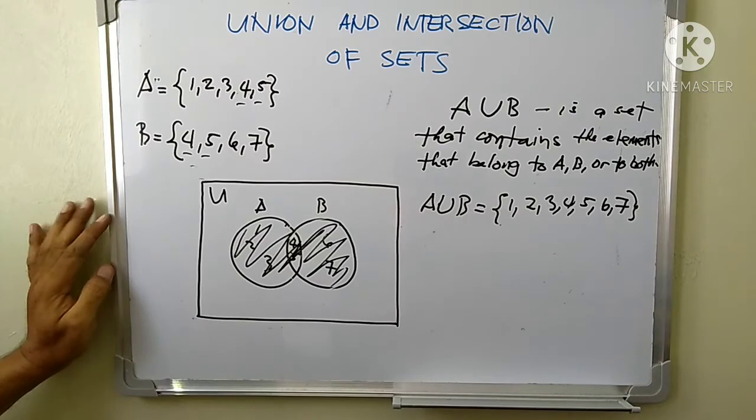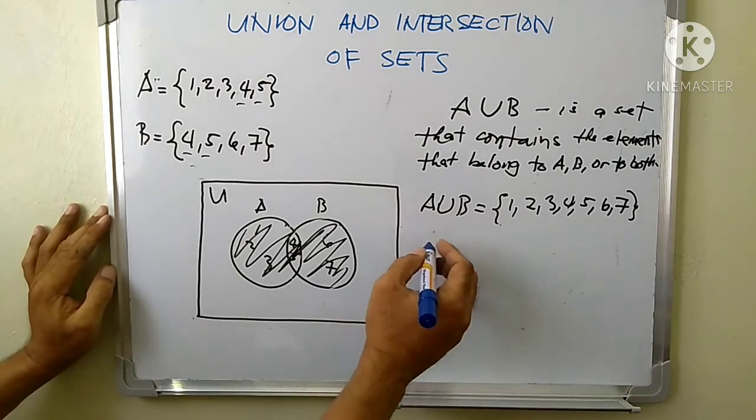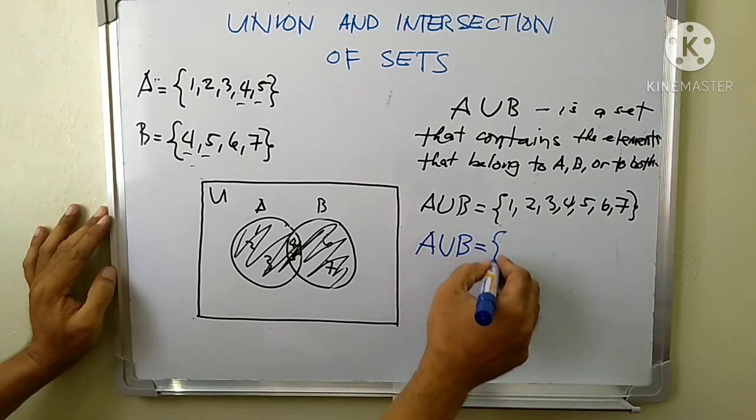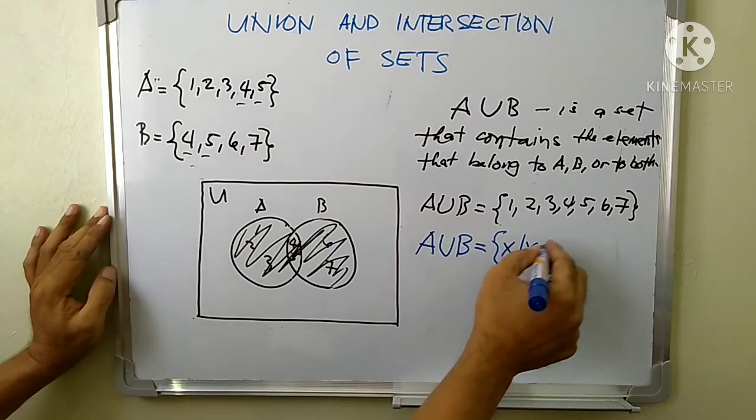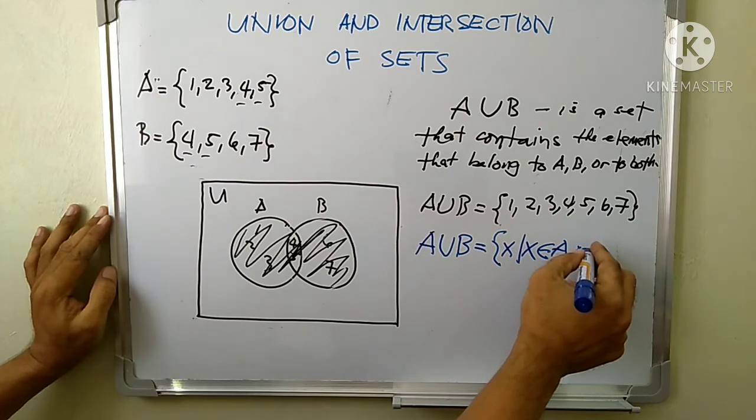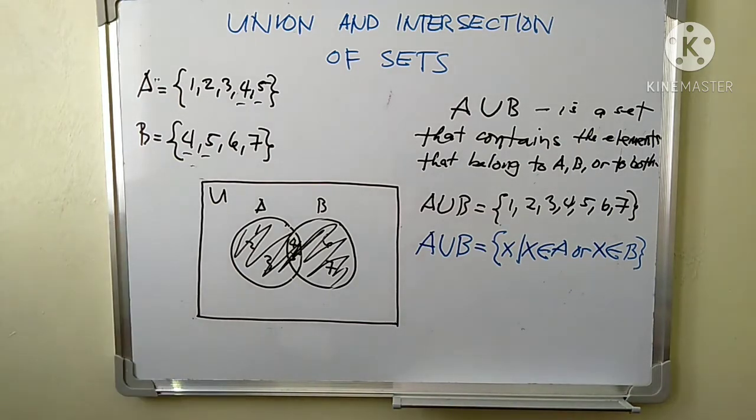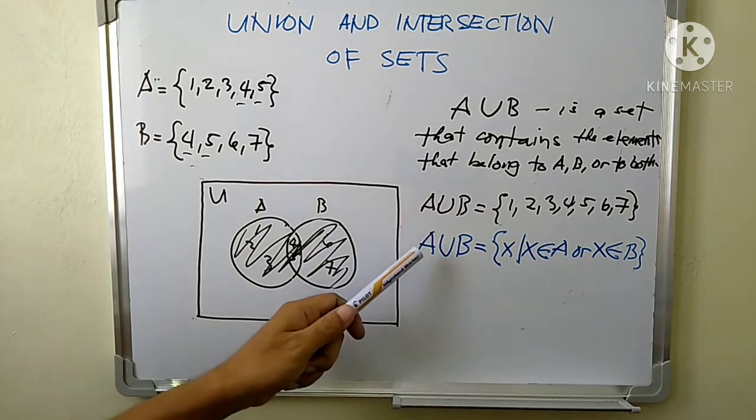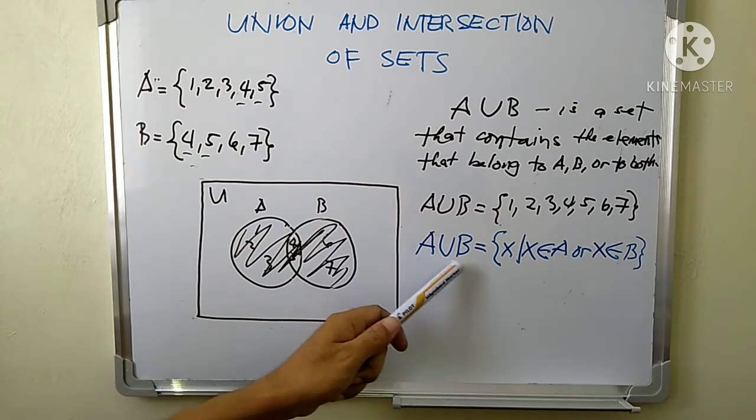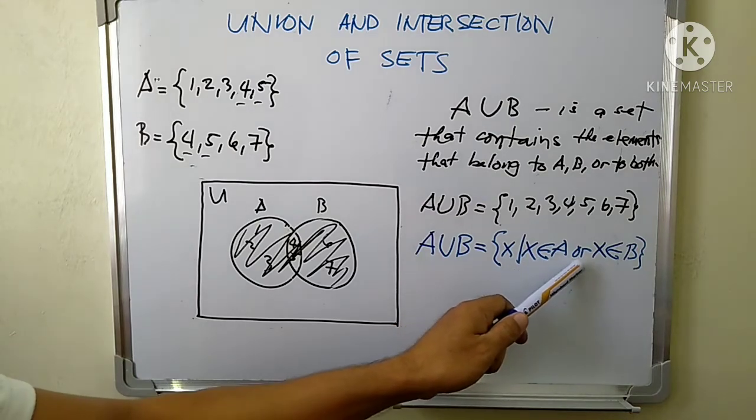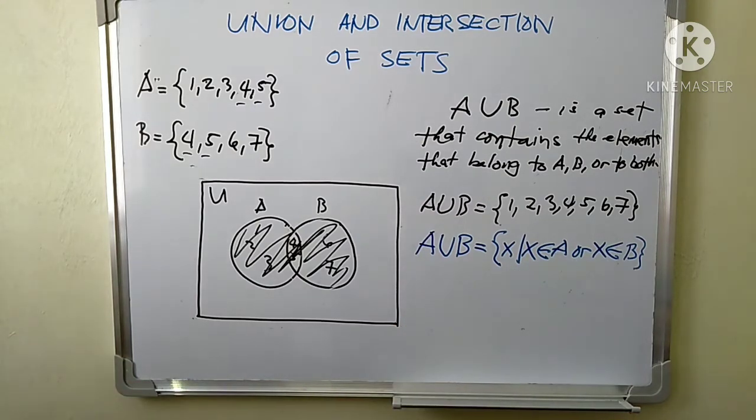Let us now write in symbols the union of two sets A and B. So we write it this way. This is the notation. We read this as the union of set A and set B is a set of all x's such that x is an element of A or x is an element of B. Now, let's go to the intersection of set A and B.